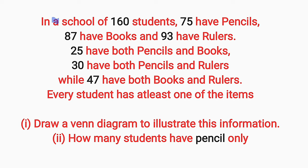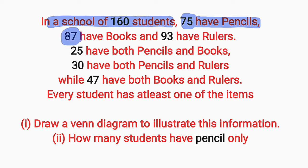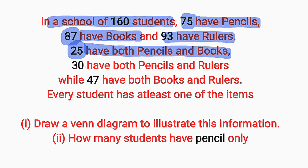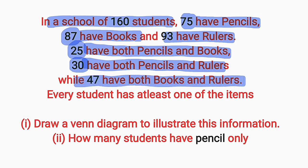The question reads: in a school of 160 students, 75 of these students have pencils, while 87 of them have books, and 93 of them have rulers. 25 of the students have both pencils and books, while 30 of them have both pencils and rulers, while 47 of the students have both books and rulers. The question states that every student has at least one of the three items.